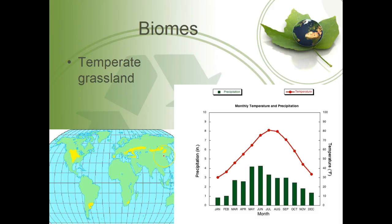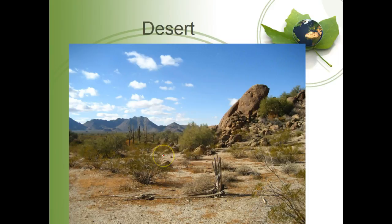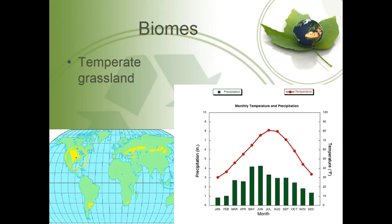Temperate grassland is where we live — that is Kansas. You get a fluctuating temperature: obviously hot in the summer and cold in the winter, and the rainfall typically follows that same trend. We get most of our precipitation during spring, summer, and fall and not as much during winter. You know what a temperate grassland looks like — it's basically your Kansas prairie.